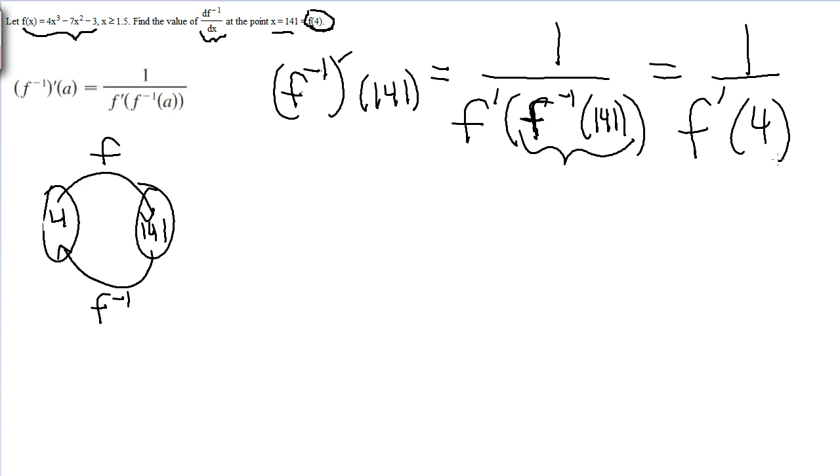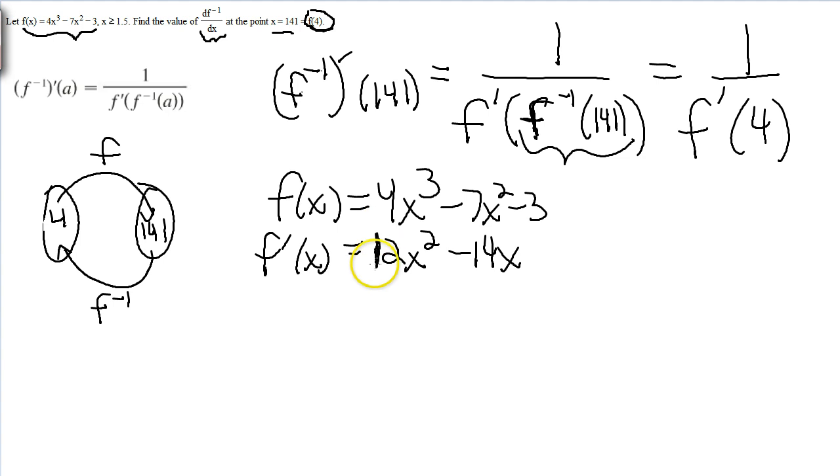Okay, so take the derivative. If your function is 4x cubed minus 7x squared minus 3, your derivative is 12x squared minus 14x.